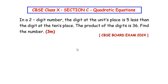Hello and welcome to my channel. In this video we are going to solve a Section C question from the Quadratic Equations chapter. This had appeared in the CBSE board exam 2024. In a two-digit number, the digit at the units place is five less than the digit at the tens place, and the product of the digits is 36.